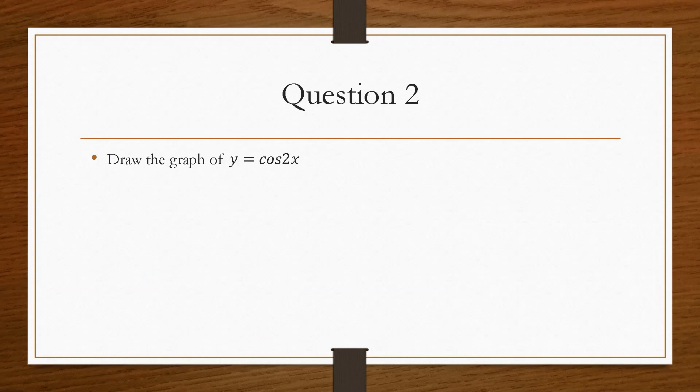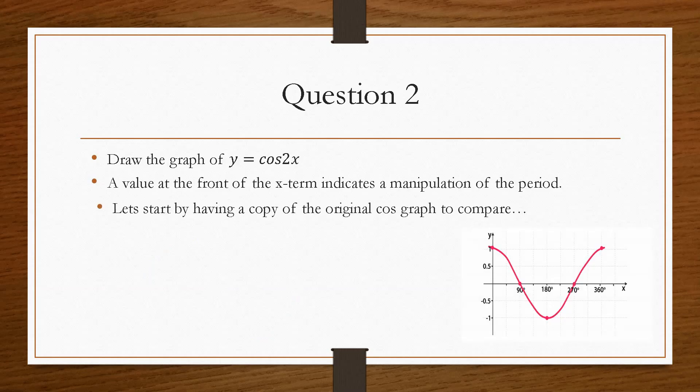And in the second question, we will draw a graph of y equals cos 2x. So again, the value that timeses the x is now going to have a manipulation on the period, that is, how many revolutions we have within 360 degrees. And just like before, we will draw the standard graph before we can then construct y equals cos 2x. We need to know what y equals cos x is.